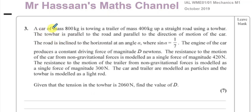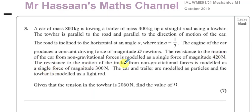Question three is about a car of mass 800 kilograms towing a trailer of mass 400 kilograms up a straight road using a tow bar. The tow bar is parallel to the road and the direction of motion. The road is inclined to the horizontal at angle alpha where sine alpha is 1 over 7. The engine of the car produces a constant driving force of magnitude D Newtons. The resistance to motion of the car is 420 Newtons and for the trailer is 300 Newtons. The car and trailer are modeled as particles and the tow bar as a light rod. Given that the tension in the tow bar is 2060 Newtons, find the value of D.